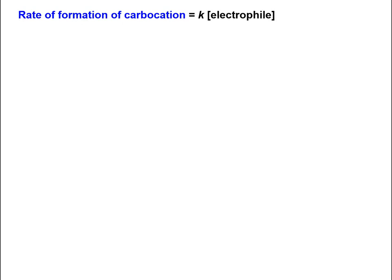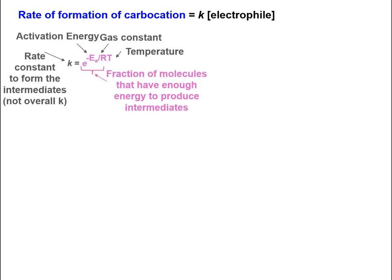The rate of reaction forming the carbocation is dependent on the concentration of the electrophile only. The rate of reaction thus equals the rate constant times the concentration of the electrophile. The rate constant will equal the fraction of molecules that have enough energy to produce the carbocation.